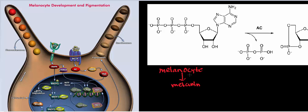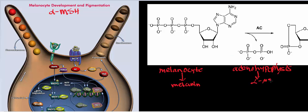In the previous video, we went over the synthesis of a hormone called alpha-melanocyte-stimulating hormone. The tissues that make alpha-melanocyte-stimulating hormone are the anterior pituitary gland, or what we typically call the adenohypophysis. Alpha-melanocyte-stimulating hormone circulates in the blood, just like all the tropic hormones from the anterior pituitary gland.